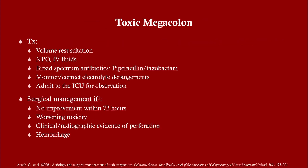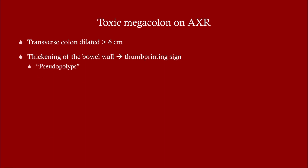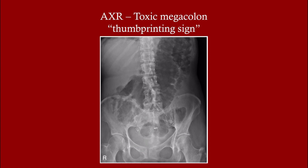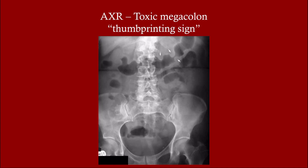Treatment: address ABCs first with volume resuscitation, make the patient NPO with IV fluids, get blood cultures first, then start broad-spectrum antibiotics. Monitor for electrolyte derangements. These patients should be in the ICU. Surgery is indicated if there are signs of perforation, no improvement within 72 hours, or signs of hemorrhage. On abdominal x-ray, the classic finding is the thumbprinting sign in a dilated colon — these thumb-print impressions are indicative of toxic megacolon and are usually quite obvious on your exam.